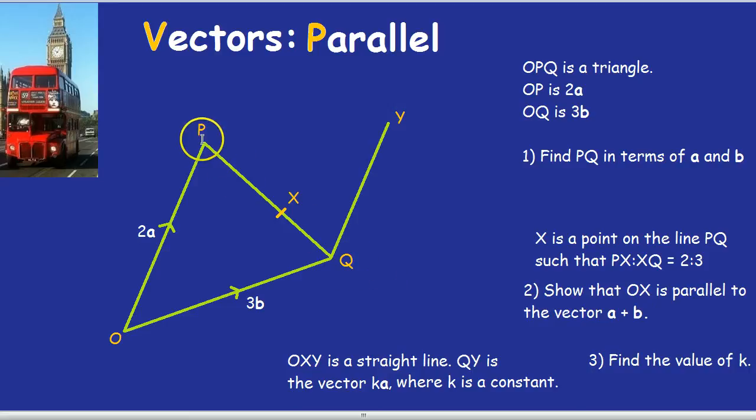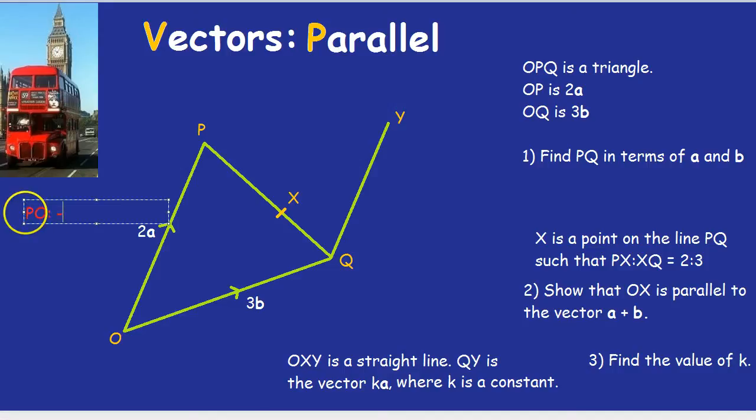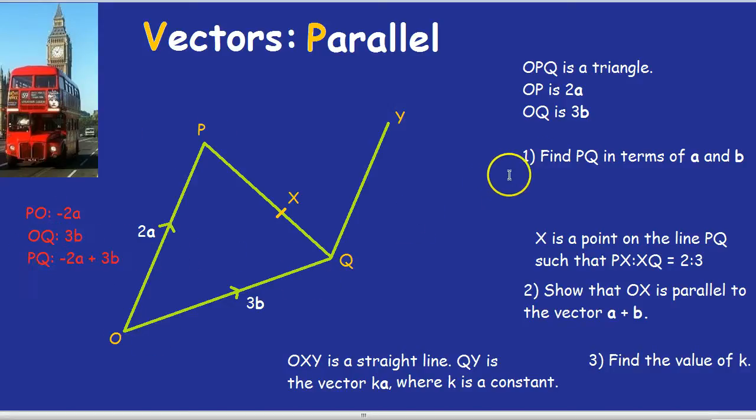Well, to get from P to Q, we'd have to go down to O and then up to Q. We can't go straight across because we don't know what vector that is. To get from P to O, we'd have to go against the arrow, opposite to the direction of the arrow. So it wouldn't be 2a, it would be minus 2a. So PO is minus 2a. Now from O to Q is simply the vector they gave us, so that's 3b. Adding those together we would get what PQ is. So PQ is minus 2a plus 3b. We went this way and then across. And that's our answer to question 1.